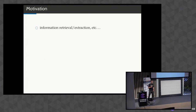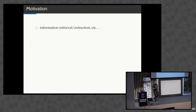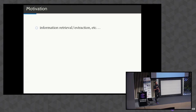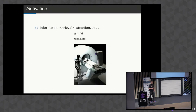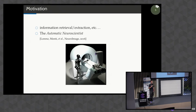Before describing Boltzmann machines, I thought I would give some motivation into why you'd want to model a text corpus. At this conference we've seen examples of recommender systems or search engines where you have text as input and need to model it. There are tons of applications for modeling text. But in our work, we had a very specific motivation, based on some work we did recently which we provocatively named the automatic neuroscientist.